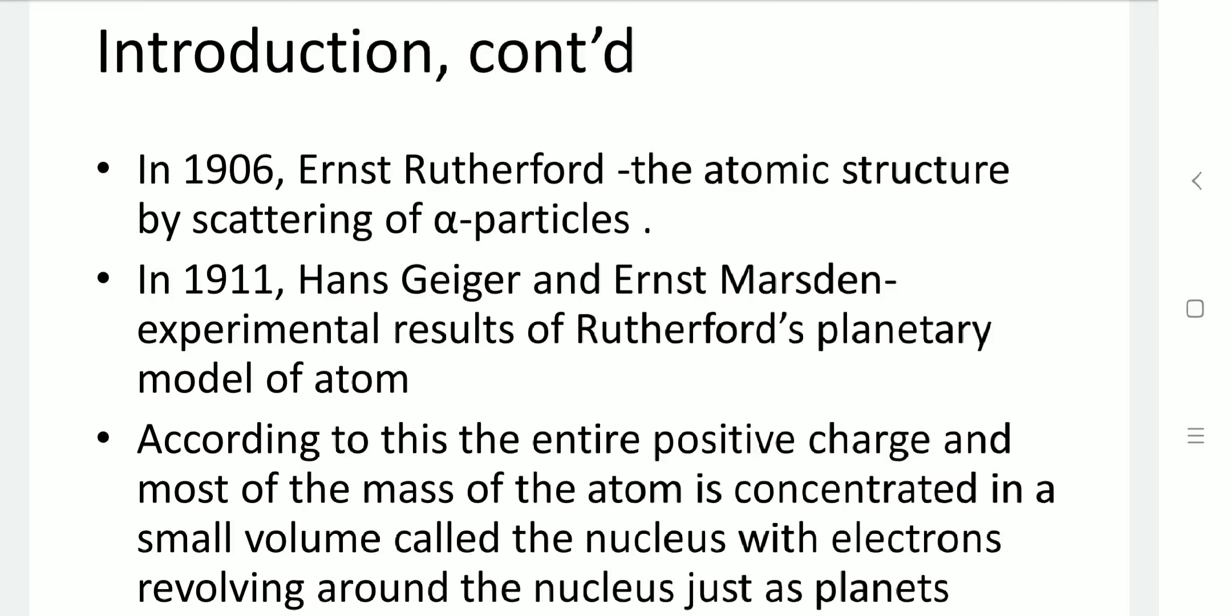In 1906, Rutherford gave a complete atomic structure by the help of scattering of alpha particles, which is completely different from the model given by J.J. Thomson. Later, it was defined that the model given by J.J. Thomson is incorrect, and the atomic structure given by Rutherford is acceptable universally. In 1911, Hans Geiger and Marsden gave the experimental result of Rutherford's theory based on planetary motion. The electrons are moving in a circular form around the nucleus.